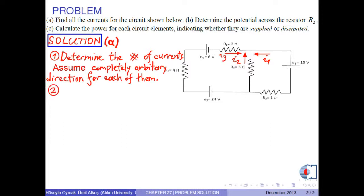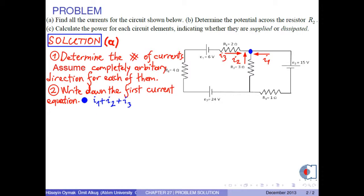Step 2: Write down the first current equation. For the junction shown by the blue circle, the input current is I1 plus I2 plus I3 and the output current is zero. We call this equation 1.